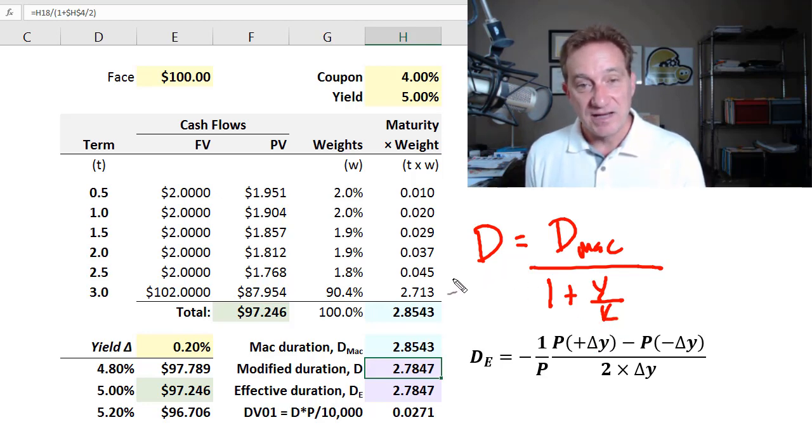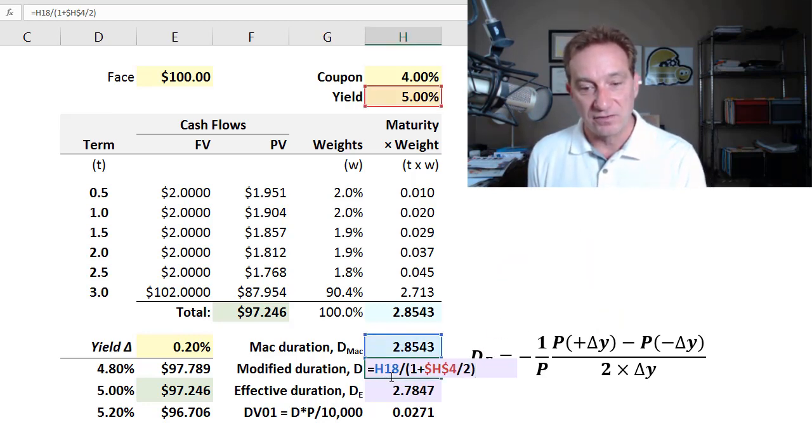And so in any case where the yield is with discrete compounding, you can see we're going to have a non-negative K and a modified duration that will be slightly less than the Macaulay duration. And that's what we have here. You can see for my modified duration, I'm taking the 2.85 years, which is the bond's weighted average maturity, aka Macaulay duration and dividing by one plus the yield of 5% itself divided by two, because there are two compound periods per year.